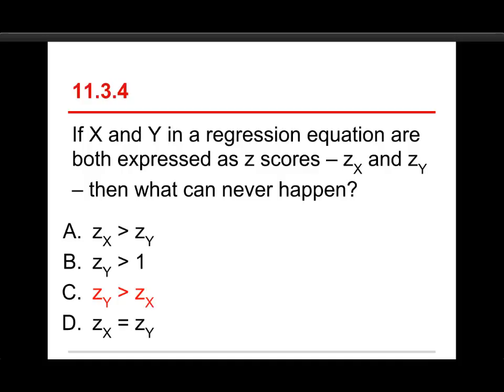Z sub Y can be greater than 1. Well, Z scores can be greater than 1. You know, it's correlation coefficients and R squared—those are restricted to 1, but Z scores can be greater. And then, this, the one on the bottom, Z sub X is equal to Z sub Y. Yeah, yeah, that can happen. If they're both 0, or if you have a perfect correlation coefficient. But anyhow, the answer to this question is C.